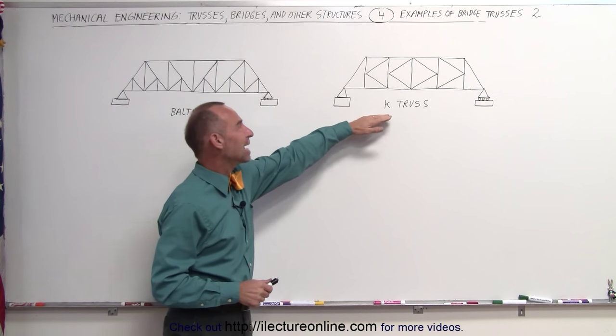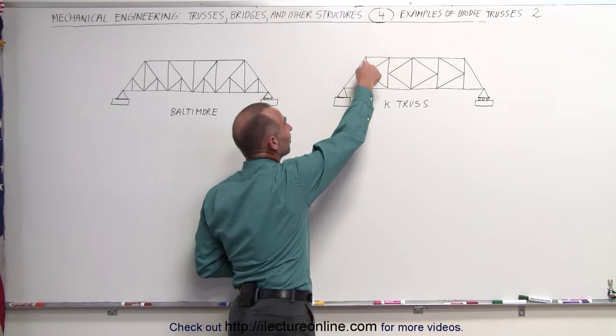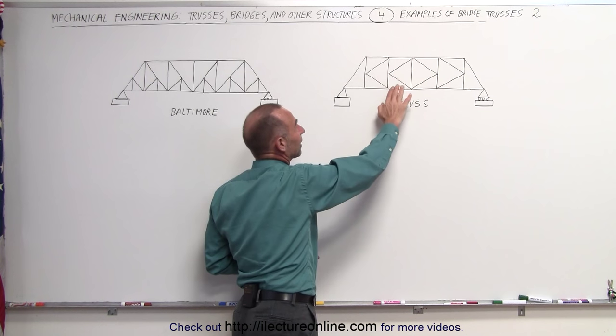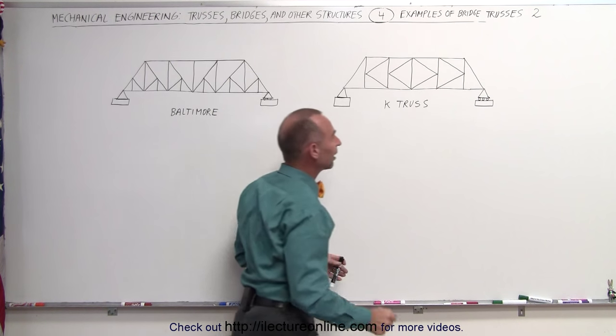And here it's called the K truss. Notice that the members inside look like big letter K's in one direction and then the reverse direction over there.